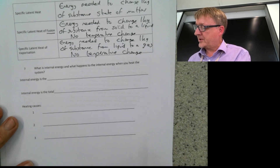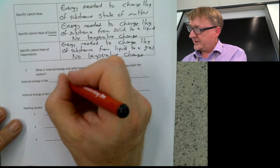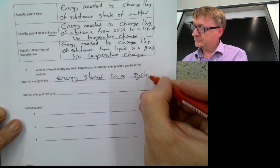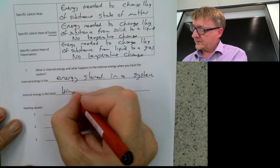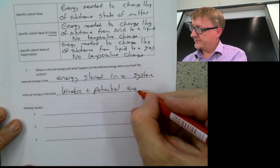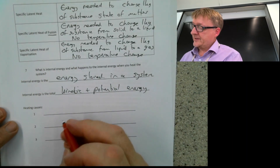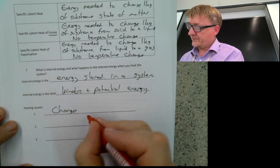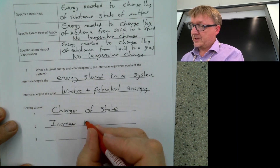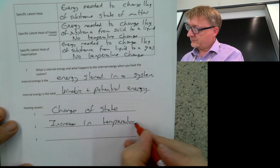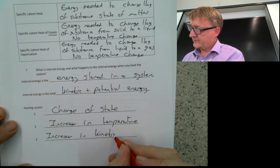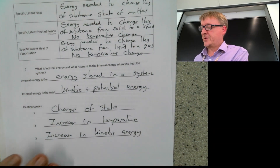Internal energy is the energy stored in a system — it is the total kinetic and potential energy in your system. If you heat anything, what can happen is you can get a change of state, an increase in temperature, and an increase in kinetic energy — that's the movement energy, so if you heat something the particles are going to move more.